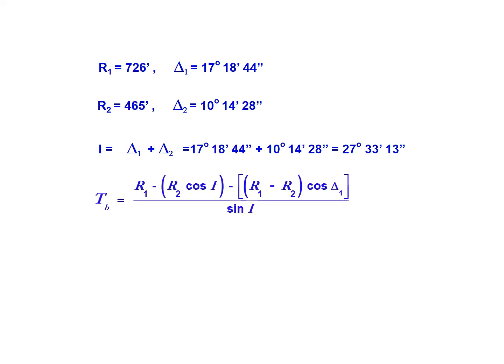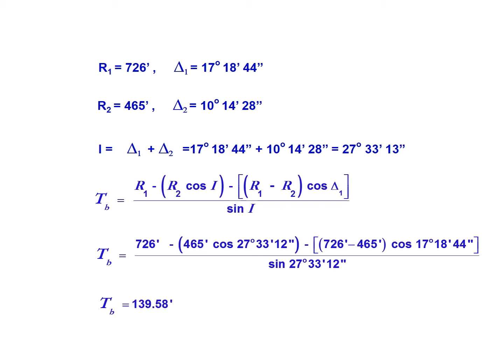For this problem, we are going to solve for T sub B. That's the tangent of interest for this particular problem to solve for the stationing for this compound curve. Inputting the terms for R1, R2, the intersecting angle, and delta 1, we can then work out the problem for T sub B. Simplifying, we should find a tangent for this curve between the PI and the PC of 139.58 feet.